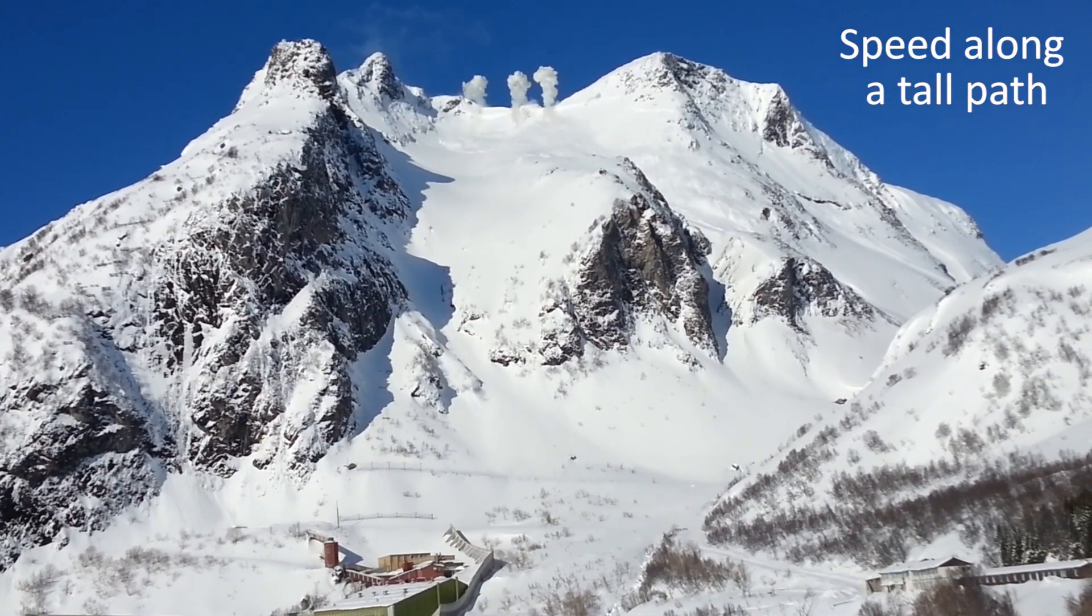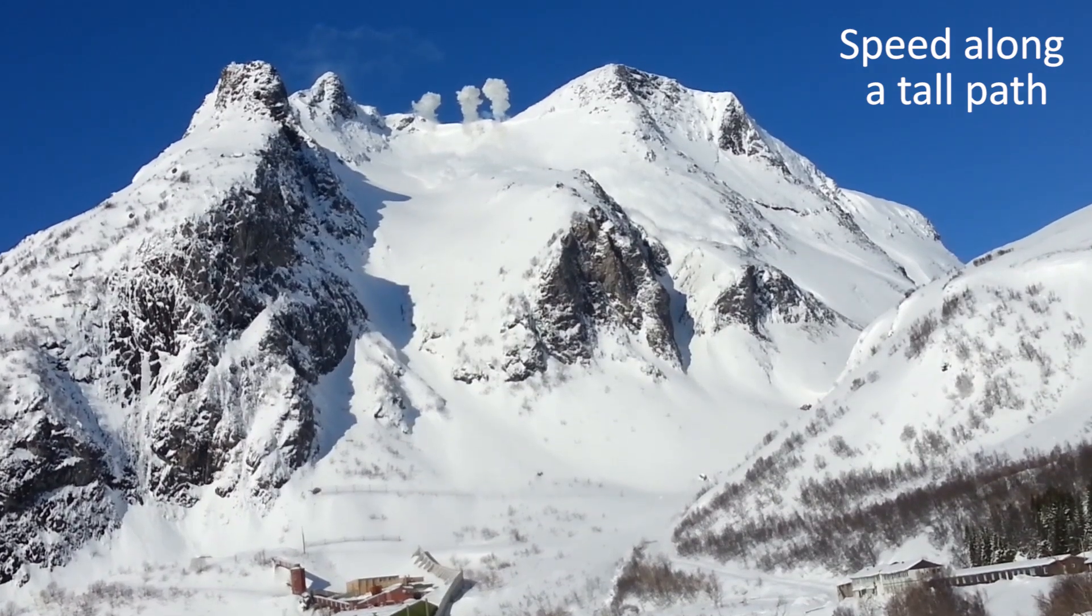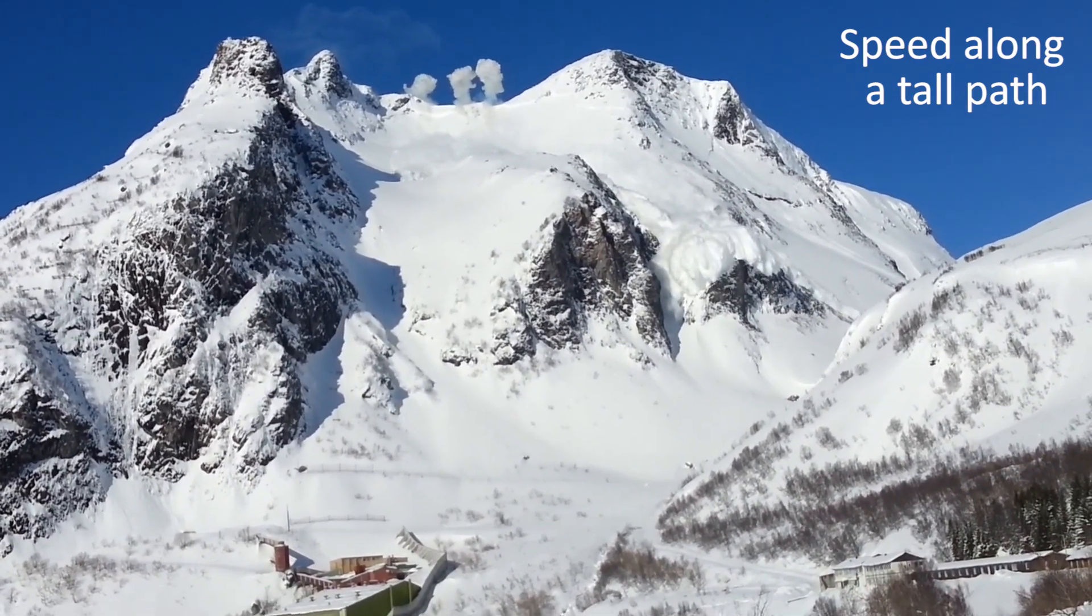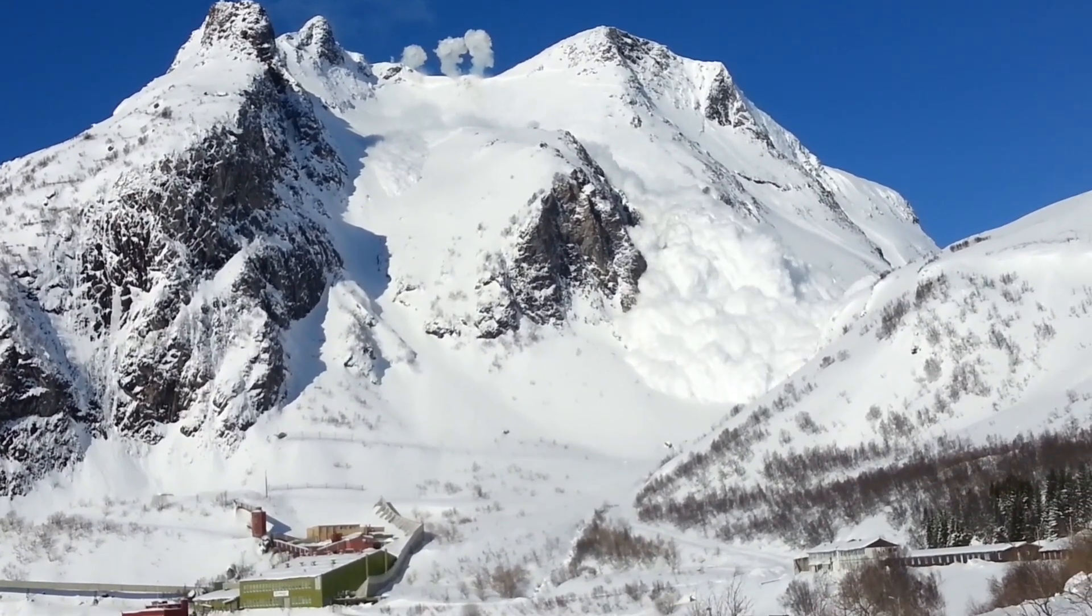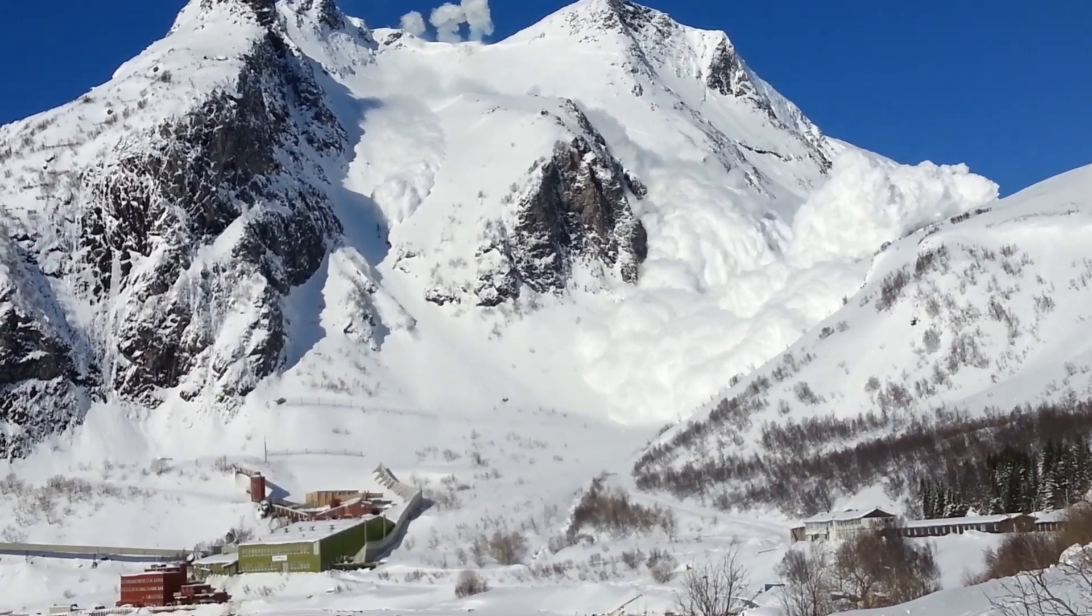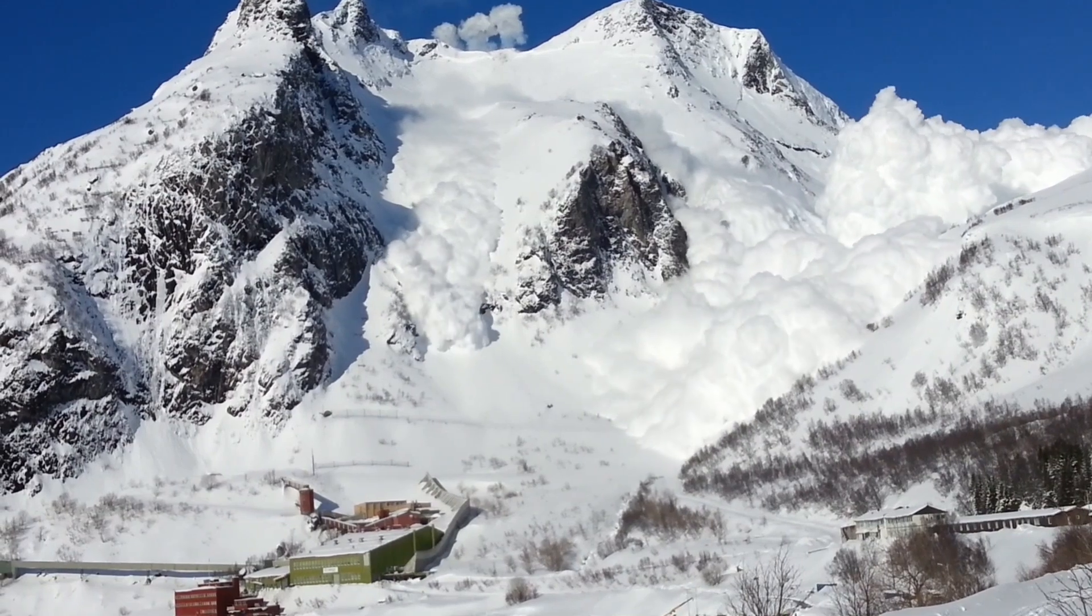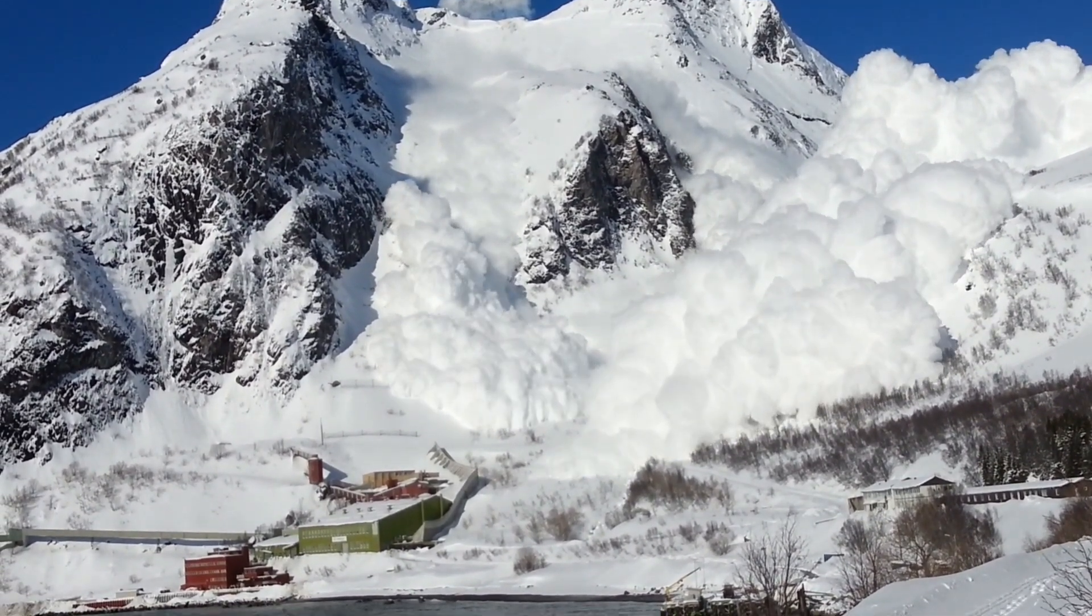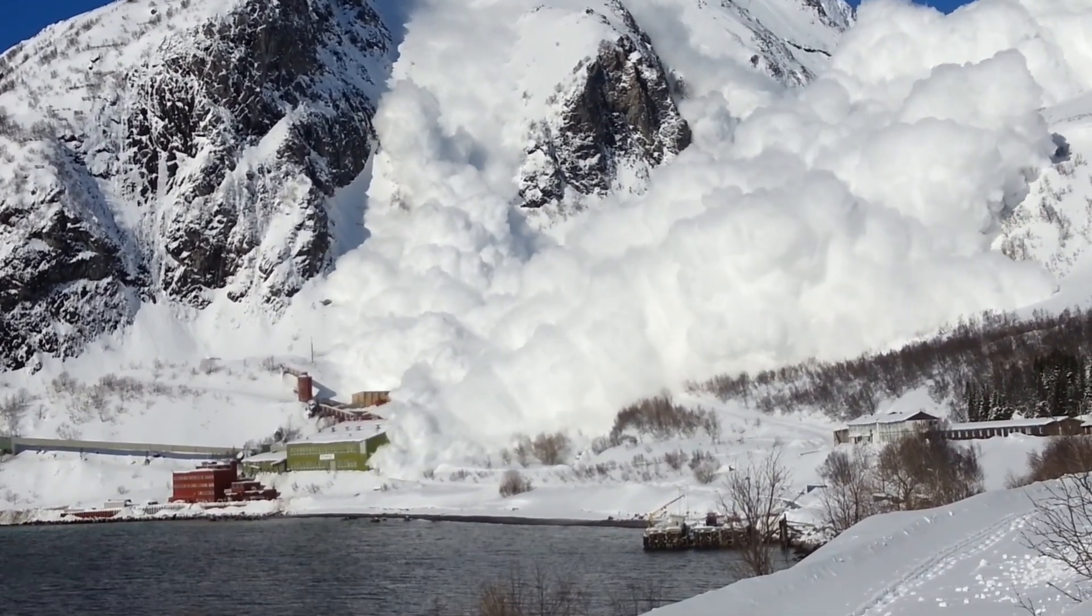Let's look at how the speed varies along a tall avalanche path. In this video of a large dry avalanche, we see rapid acceleration in the start zone. Now, we see formation of the powder layer that hides the dense flow. In the track, the speed is relatively constant. On the gentle slope near the buildings, the avalanche decelerates.